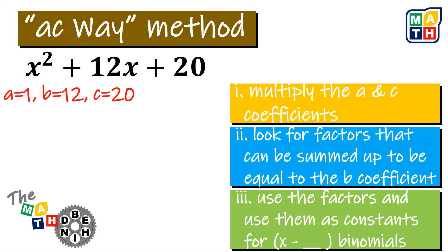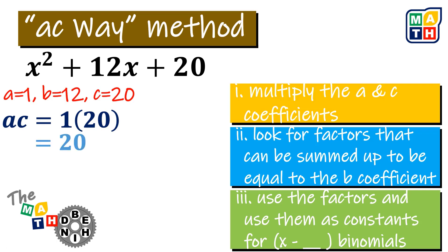First, we need to identify the A, B, and C coefficients of this given quadratic expression. Given here, we can now multiply A and C to get a result of 20. That's for step one.